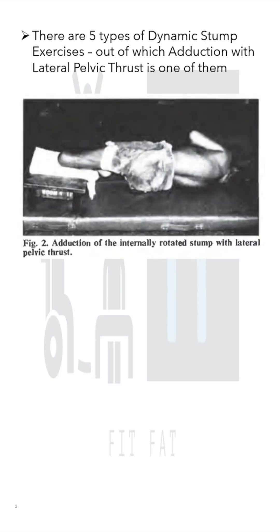In this figure, you can see the patient performing the exercise. The patient position is sidelying on the unaffected side. The stump is resting on the stool. The opposite leg is flexed at hip and knee. The trunk is stabilized by the arms, and the stump is pushed strongly downwards into adduction and the pelvis is lifted.